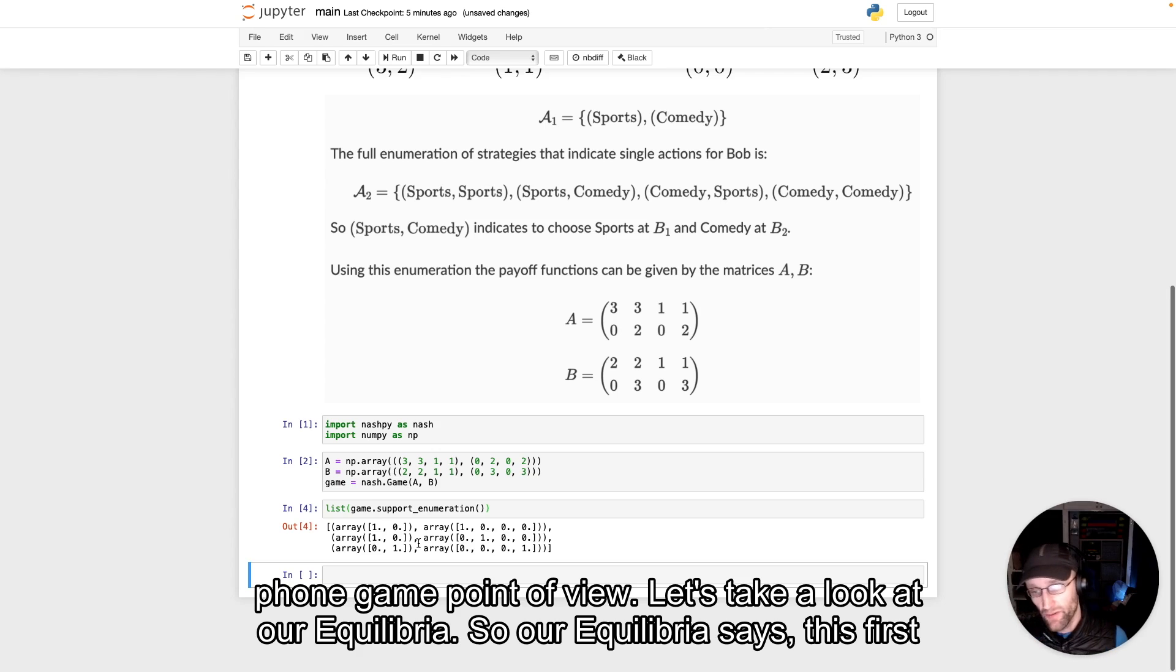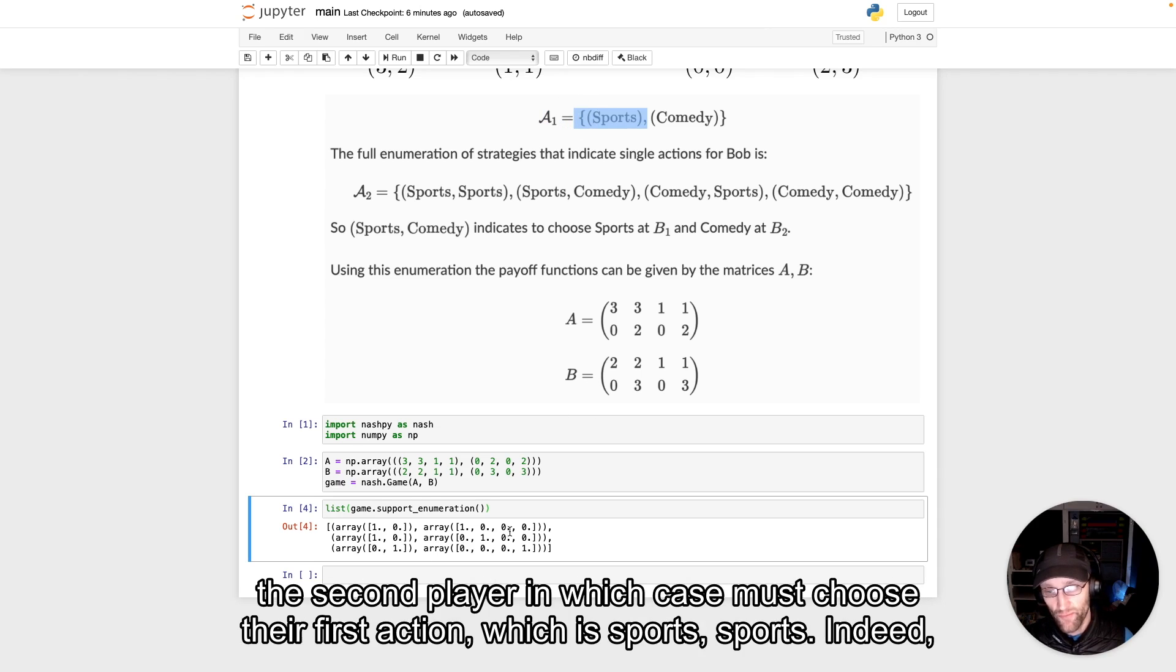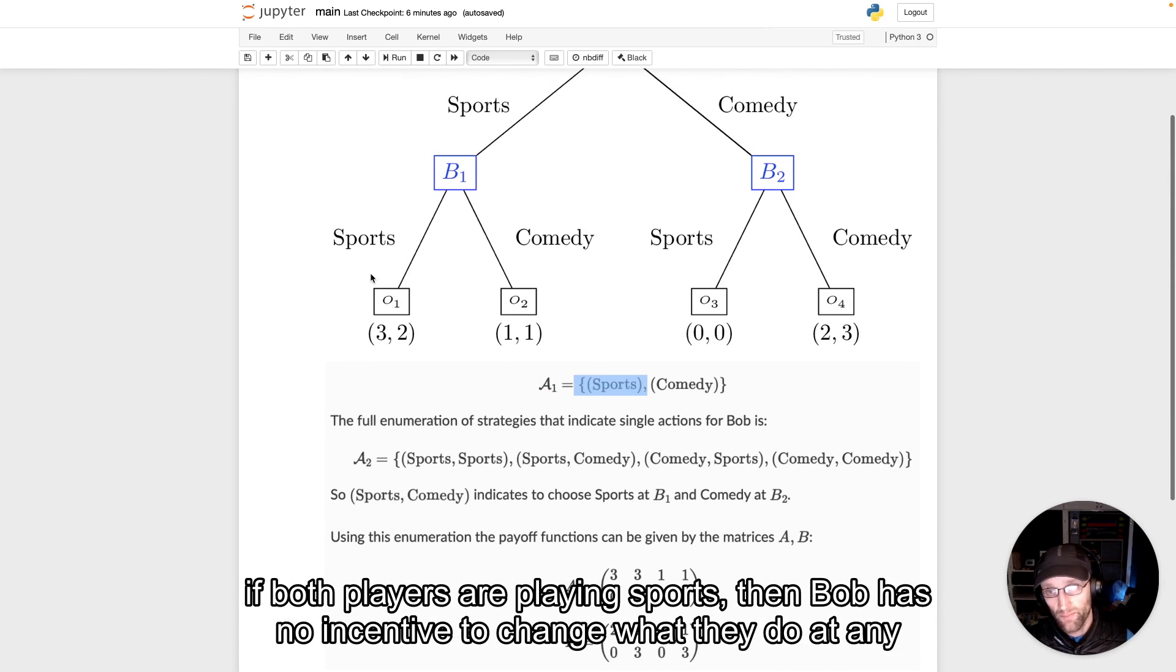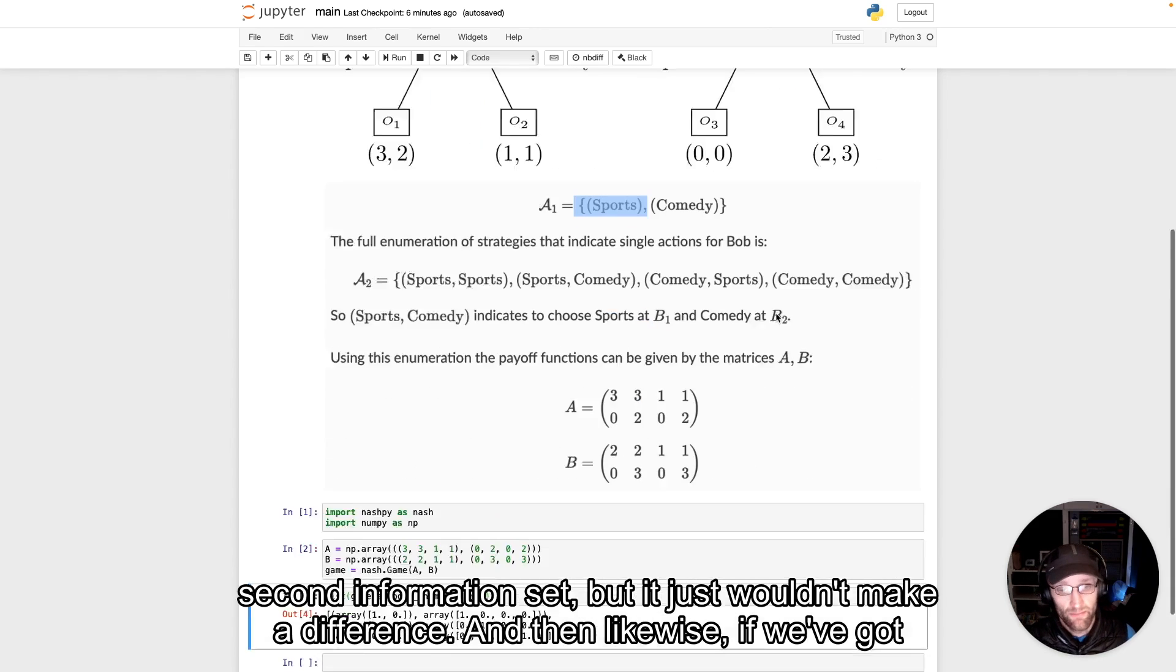But let's take a look at our equilibria. So our equilibria say, this first equilibria says the first player must choose the first action. So that means choose sports. And the second player in which case must choose their first action, which is sports sports. Indeed, if both players are playing sports, then Bob has no incentive to change what they do at any particular information set. In fact, they could choose sports here and something else at the second information set, but it just wouldn't make a difference.